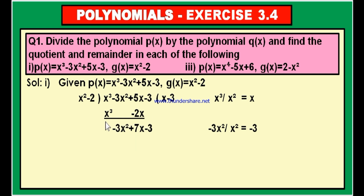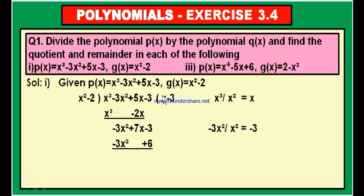Divide the new dividend minus 3X square plus 7X minus 3 by the divisor X square minus 2. The first term of the new dividend is minus 3X square; divide by X square to get minus 3. Write minus 3 in the quotient place and multiply all terms of the divisor: minus 3 into X square is minus 3X square, and minus 2 into minus 3 is plus 6. Write minus 3X square under the X square term and plus 6 under the constant term. Subtract.